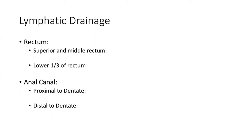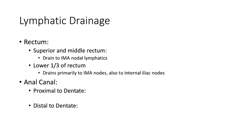For the lymphatic drainage of the superior and middle rectum, this will primarily go to the IMA nodes and lymphatics, eventually through the portal system. The lower rectum will drain via both the IMA and the internal iliac nodes. So you can imagine if some tumor cell gets into the blood and reaches the internal iliac veins, into the IVC, into the lungs — that gives you someone with a distal rectal cancer and an isolated pulmonary nodule. Whereas for any other form of colon cancer, it would be anachronistic to have an isolated pulmonary met without liver mets — you're probably just not able to see occult liver mets.